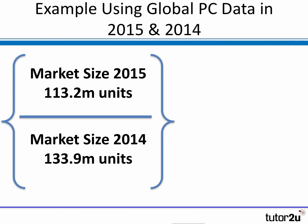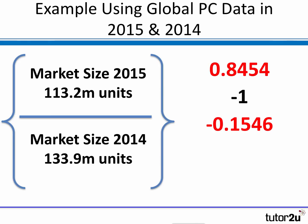Let's do the same with the global PC data, where we know the market has been falling. In 2015 the market was 113 million units; the previous year it was much higher at 134 million units. We divide one by the other, giving 0.8454. We take away one and multiply by 100, and we get a negative number: minus 15.46%. The market fell in that year by around 15% — quite a significant fall.